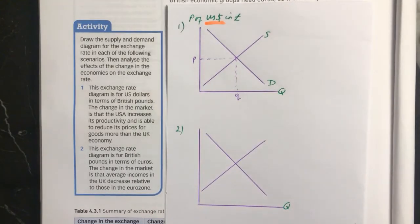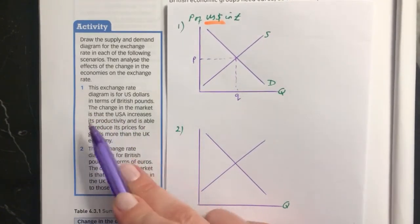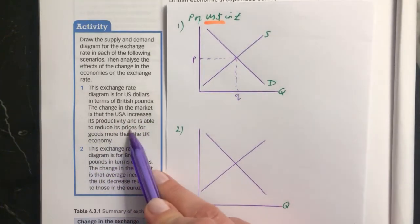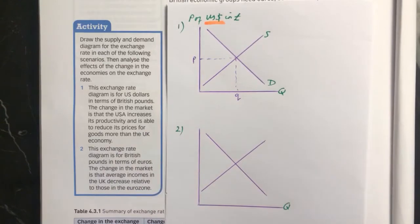And it says the change in the market is that the USA increases its productivity and is able to reduce its prices for goods more than the UK economy.